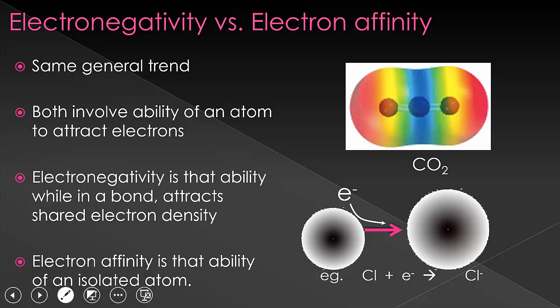Well, both electronegativity and electron affinity's trends are in the same direction and for the same reason. The horizontal trend is caused by increasing effective nuclear charge, the vertical trend by increasing distance and increased shielding.